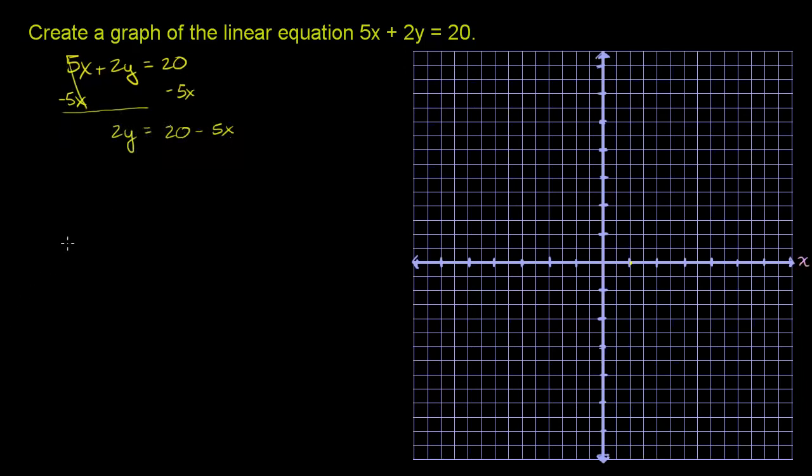And then you could divide both sides of this equation by 2. So you divide both sides by 2. The left-hand side, we just have a y. And then the right-hand side, we could leave it that way. That actually would be a pretty straightforward way to leave it. But we could call this 20 divided by 2 is 10 minus 5x over 2, or minus 5 halves times x.